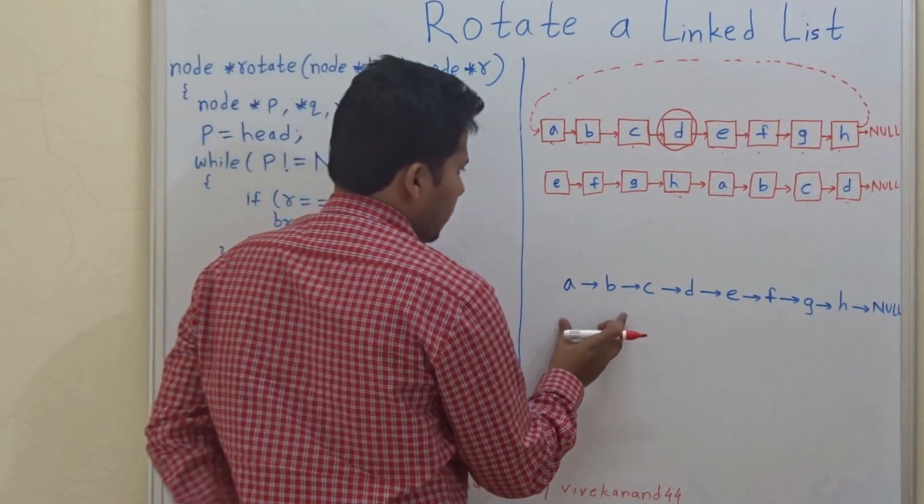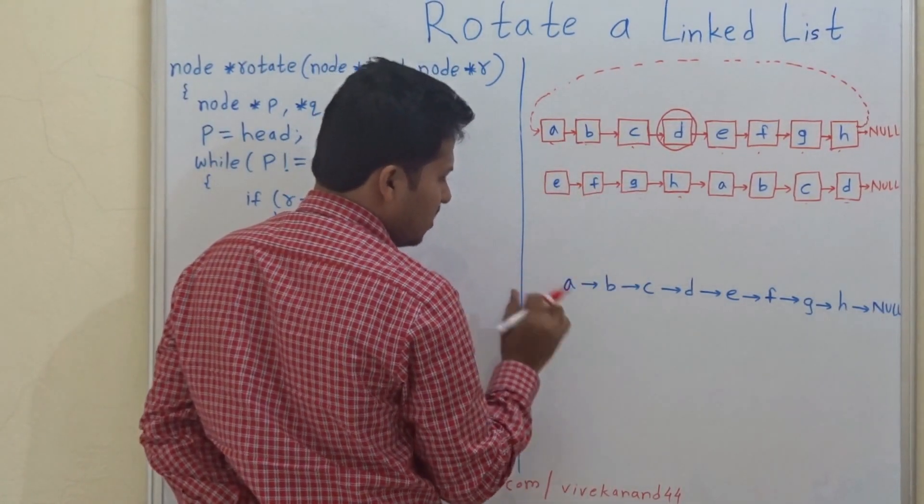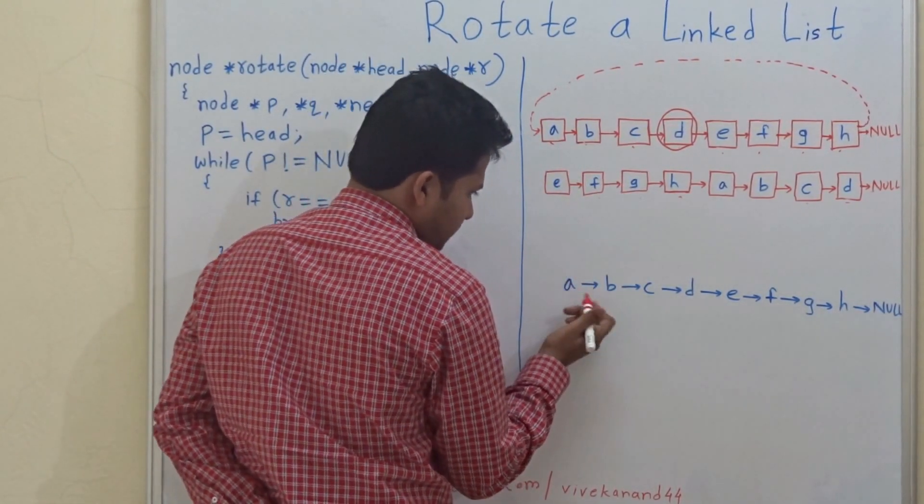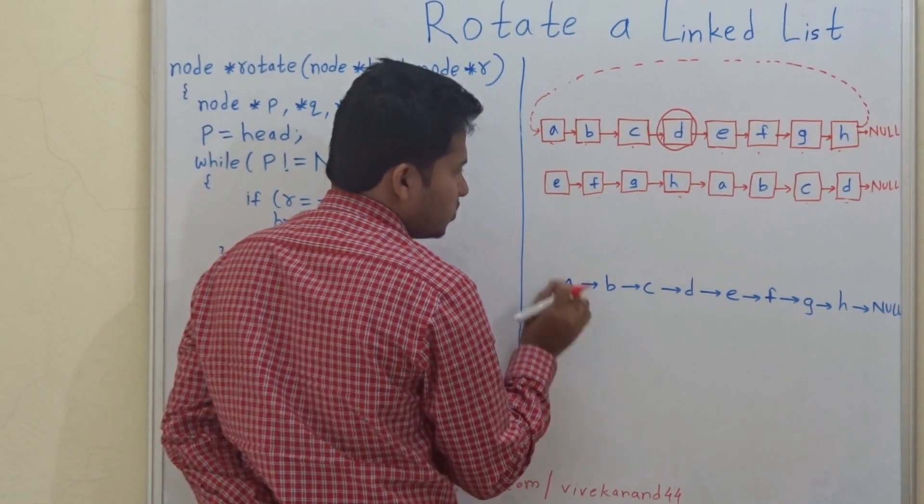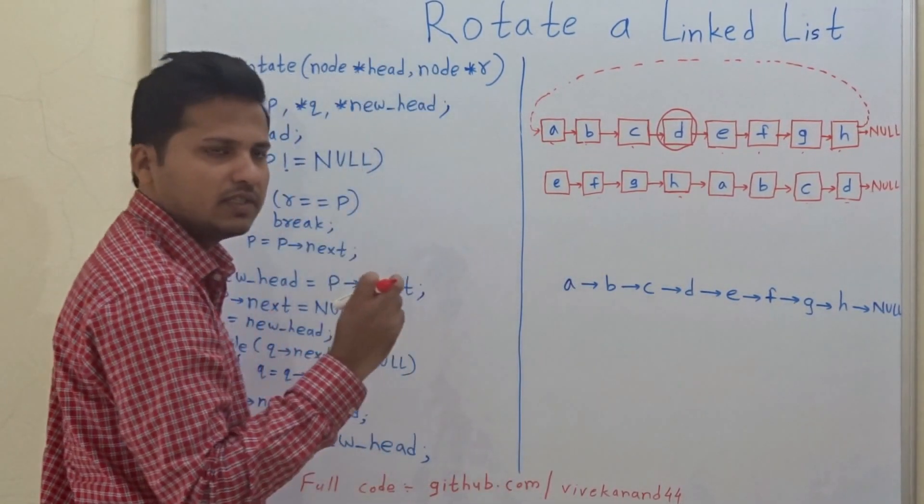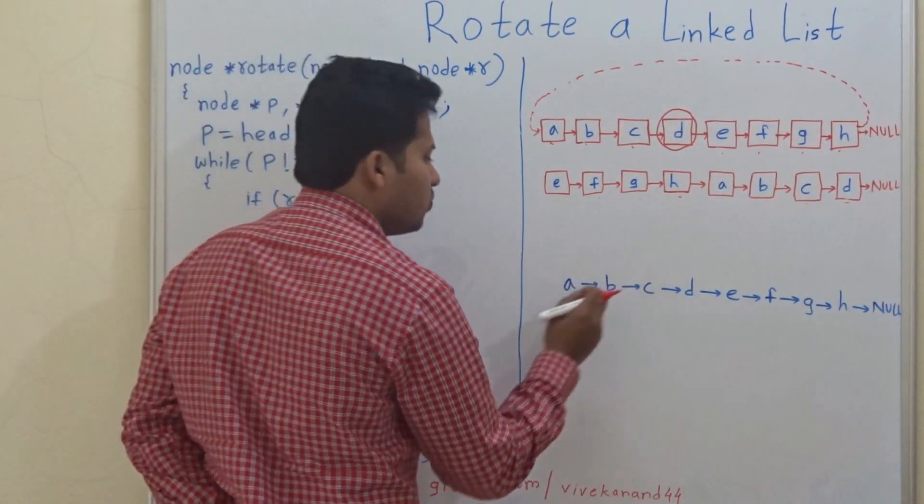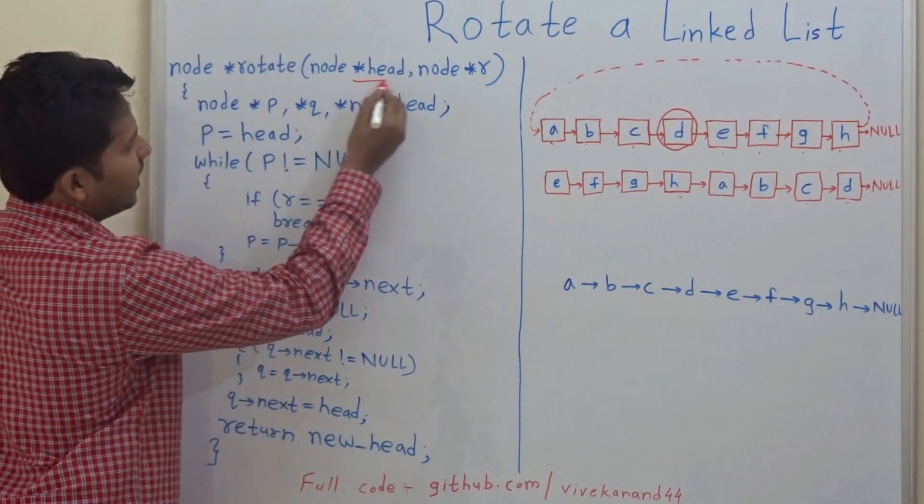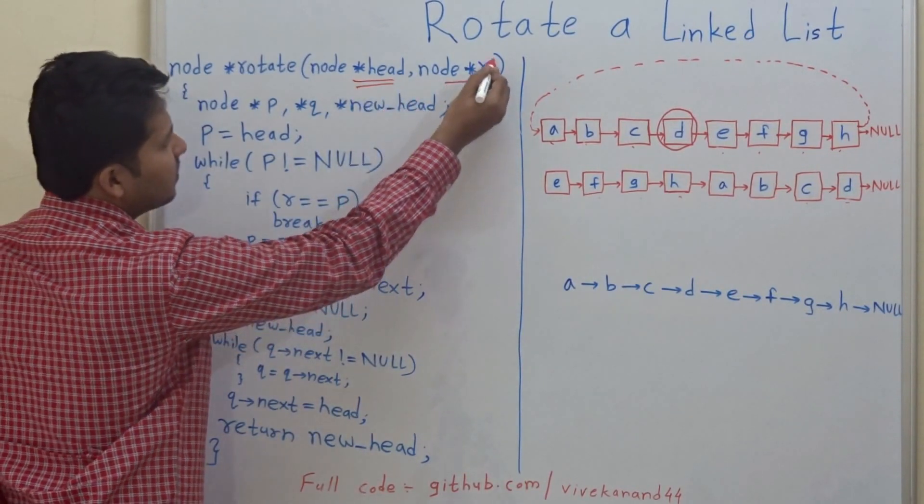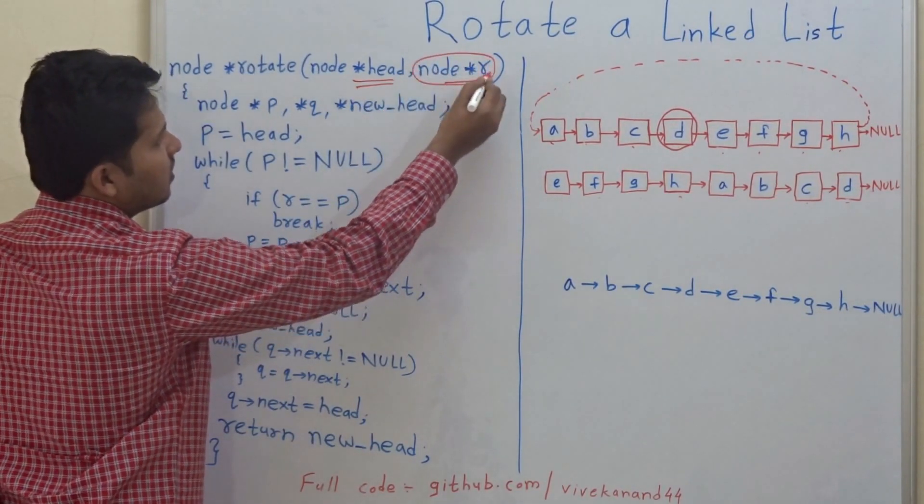This is the same example. Now, let us see what we have to do. So the first and obvious thing is we have to reach to the node. If this is the function, head is given and we will be given the node R.